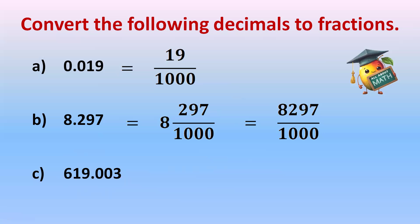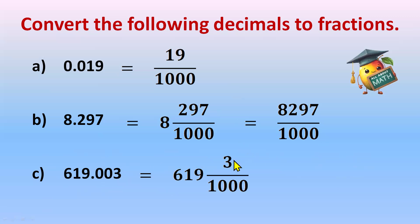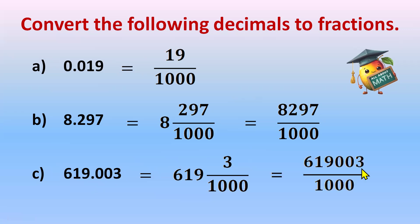For 619.003: the whole part is 619, and the decimal part 003 means 3, so numerator is 3. There are three digits after the decimal, so denominator is 1000 — giving 619 and 3 over 1000. The other way: write the full number without the decimal as 619003 divided by 1000. This is your fraction — this is how you write both the mixed and improper fraction forms.